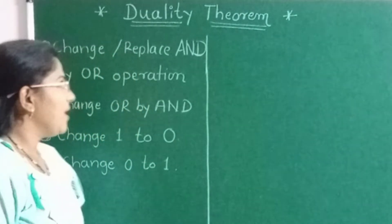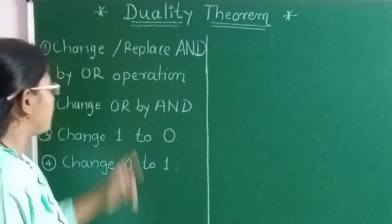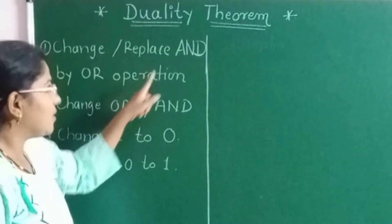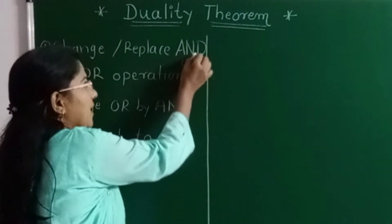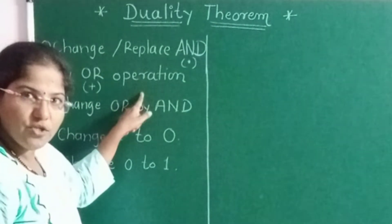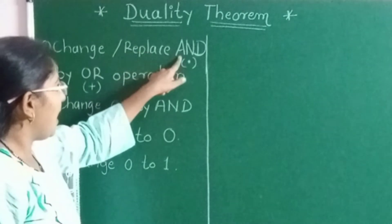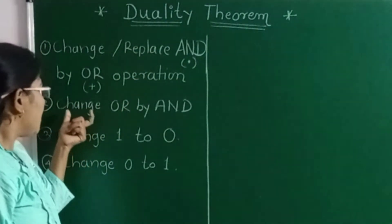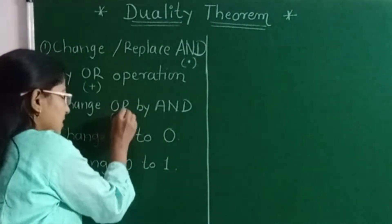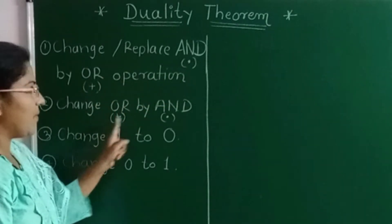The duality theorem states that whenever we get the dual of any Boolean expression, we have to change or replace the AND operation by the OR operation. The dot is used to show AND and the plus operator is used to show OR. So in short, the dual theorem states: replace dot by plus (AND by OR), and replace OR by AND — that is, replace plus by dot.